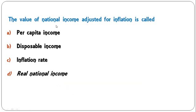Compensation of employees consists of which elements — wages and salaries in cash, wages and salaries in kind, employees' contribution to social security schemes, or all of the above? Compensation of employees consists of three elements, so all of the above — D — is the correct answer.